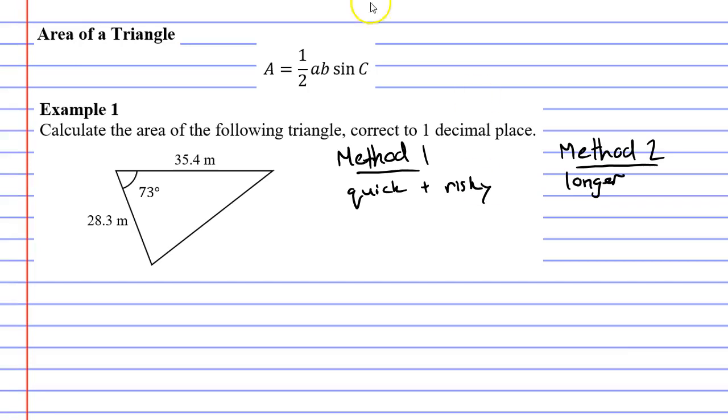Anyway let's look at our triangle. We have two sides, 35.4 meters and 28.3 meters. You'll notice that between these two sides we have what is known as our included angle. It is very important that the angle is the included angle or the angle between the two sides otherwise this won't work.